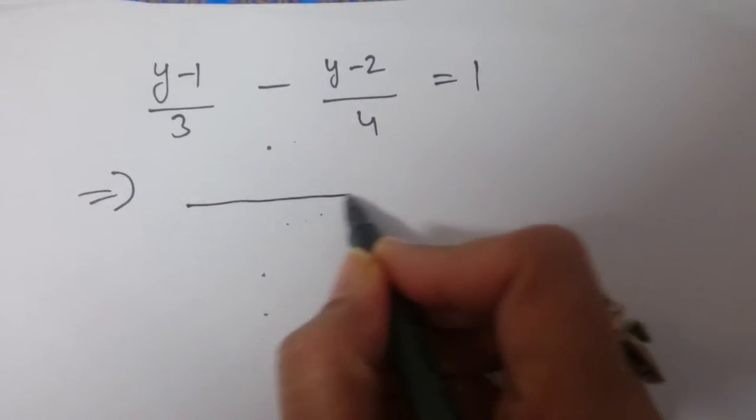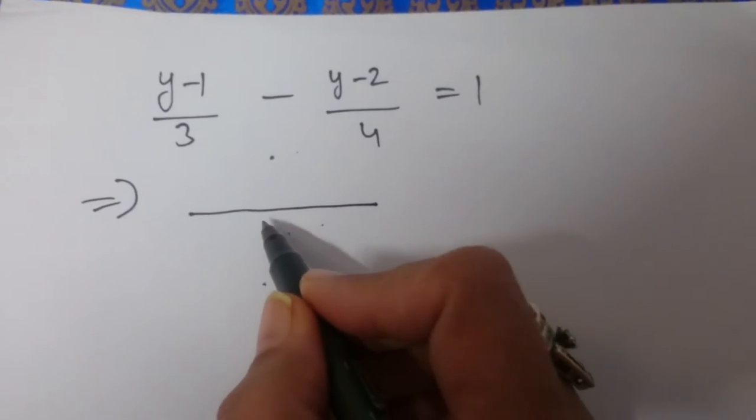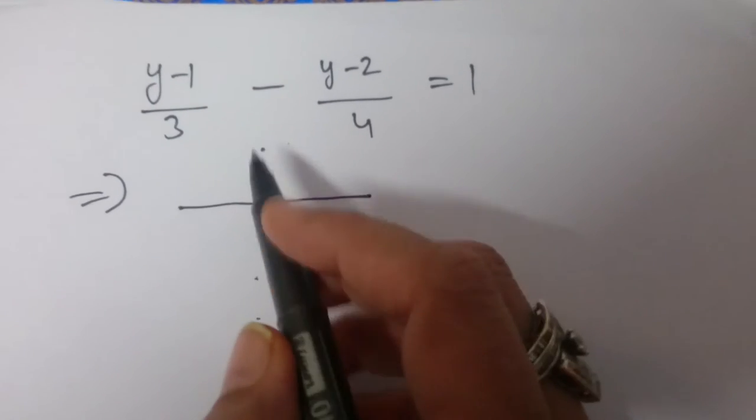What is the LCM on the left side? Yes, it is 12. 3 times 4 is 12.